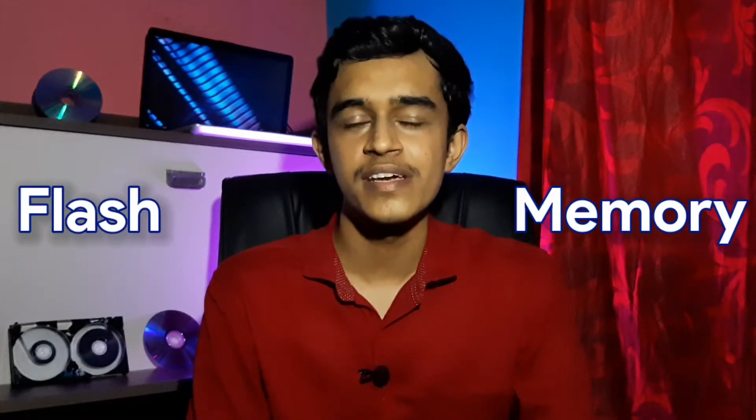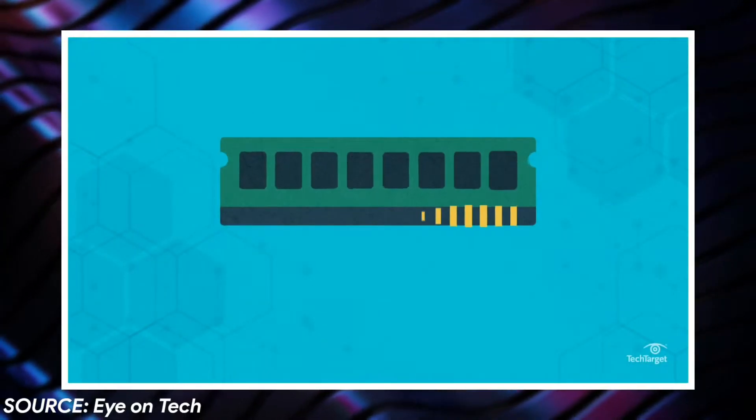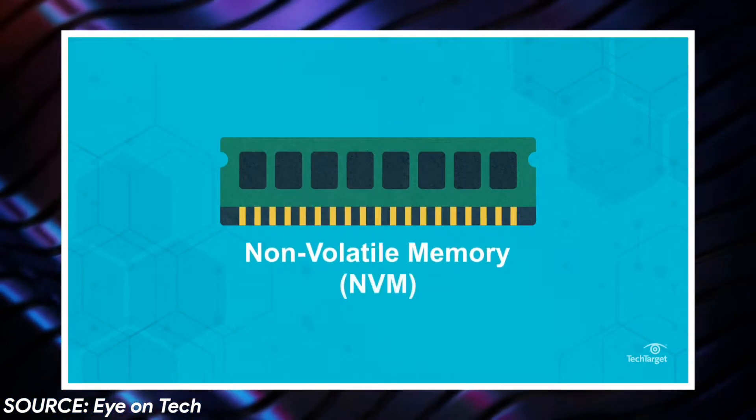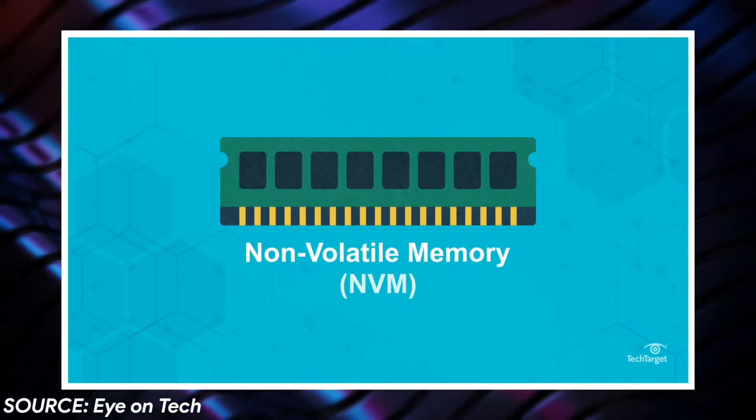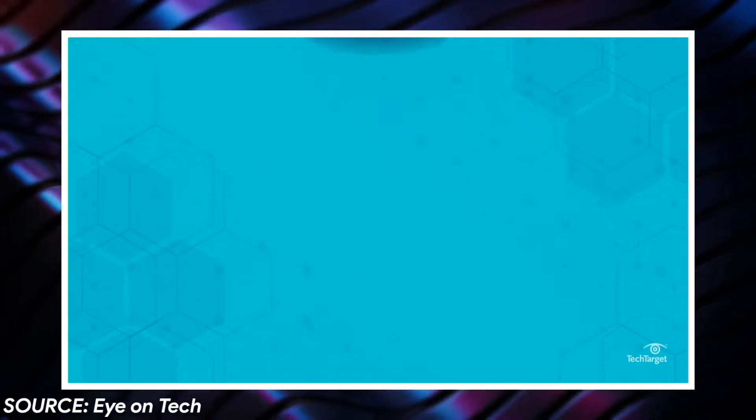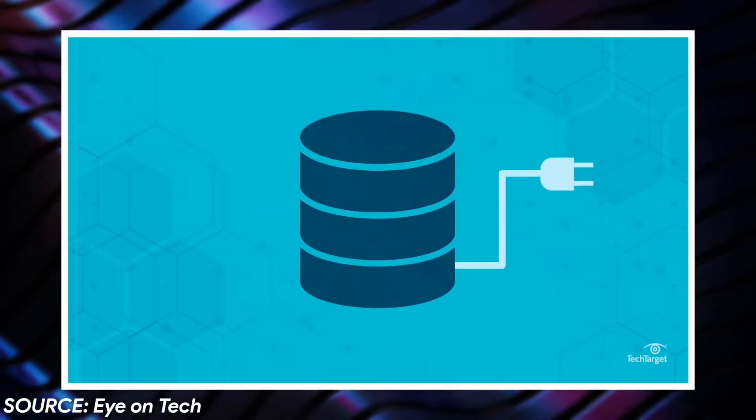SSDs are called solid state because they have no moving parts at all. Instead, they use something called flash memory. Flash memory is an electronic non-volatile memory that can be electrically erased and then reprogrammed. There are two types of flash memories: NOR flash and NAND flash.